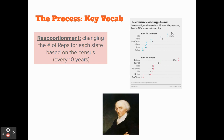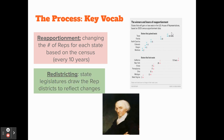California, New York, Illinois, Pennsylvania, Ohio, Michigan, and West Virginia all lost districts. So if a state either gains or loses districts, we have to go through the redistricting process.